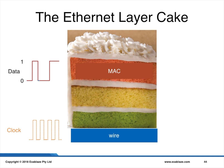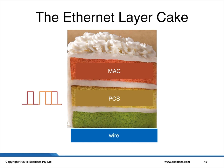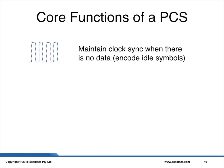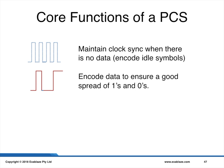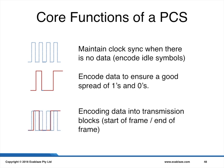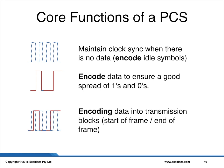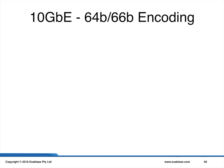We call this new layer in between the Physical Coding Sublayer, or PCS. The PCS has three core functions. The first is to maintain clock synchronization when there is no data — ensuring that there are a number of 0-to-1 transitions happening even when we are not sending data. The second is to encode data to ensure a good spread of 1s and 0s, so that we get lots of transitions while moving data and can still recover our clock. Finally, we need to distinguish between these two cases by encoding data into transmission blocks that have start-of-frame and end-of-frame delimiters. All of the core functions of the PCS layer have to do with encoding. 10 Gigabit Ethernet uses the 64B-66B encoding scheme, otherwise known as 64/66.